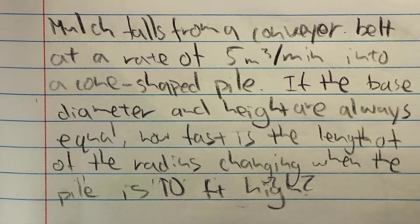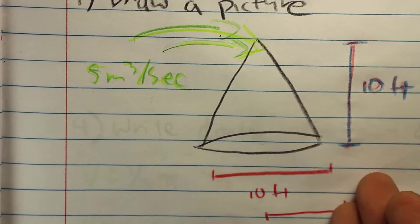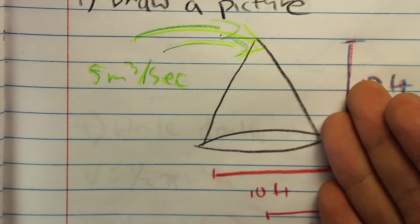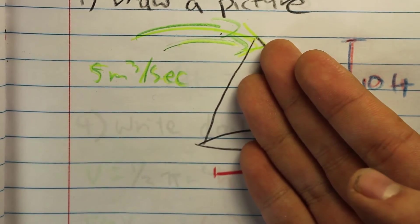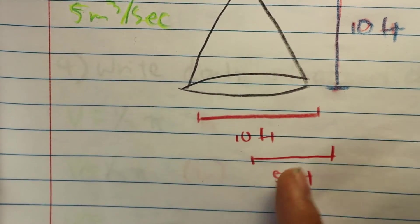As always, you will want to start off by drawing a picture. We here have a cone with a diameter of 10 feet, a height of 10 feet because of the 1 to 1 ratio, and mulch coming in at 5 m³ per second. Also, the radius can be solved because half of the diameter is 5 feet.